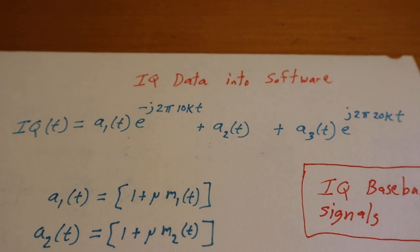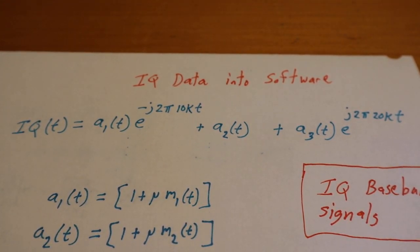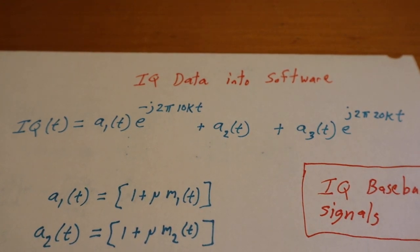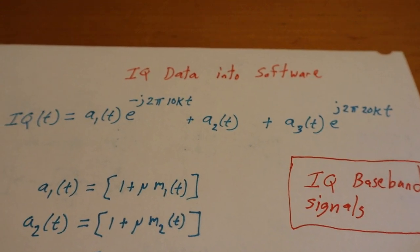And get familiar with them, because this is how you can create many radio signals at once. This is what's called again IQ baseband signals.